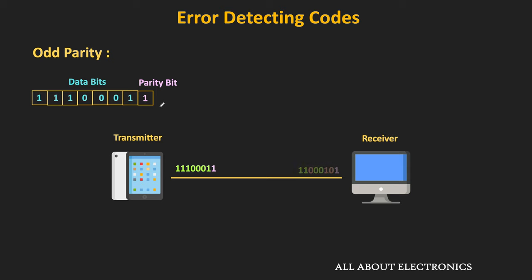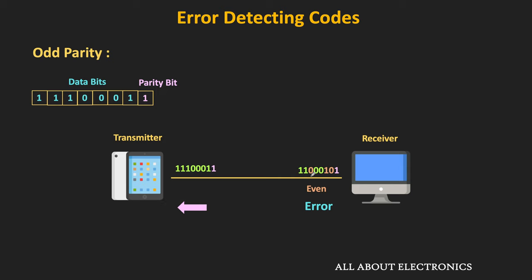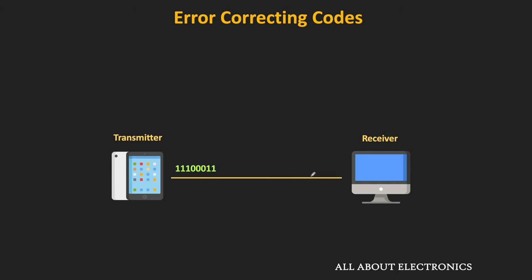But if there are 3 errors in the received code, then the total number of 1s is equal to 4. Since it is even, for odd parity the parity checker circuit will generate the error. So in short, parity can only detect an odd number of errors in the received code. Once the error is detected, the receiver sends an acknowledgement to the transmitter about the error and asks for retransmission of the same data. In this way, with the help of the parity bit, it is possible to detect errors — but we cannot find the exact location of the error.